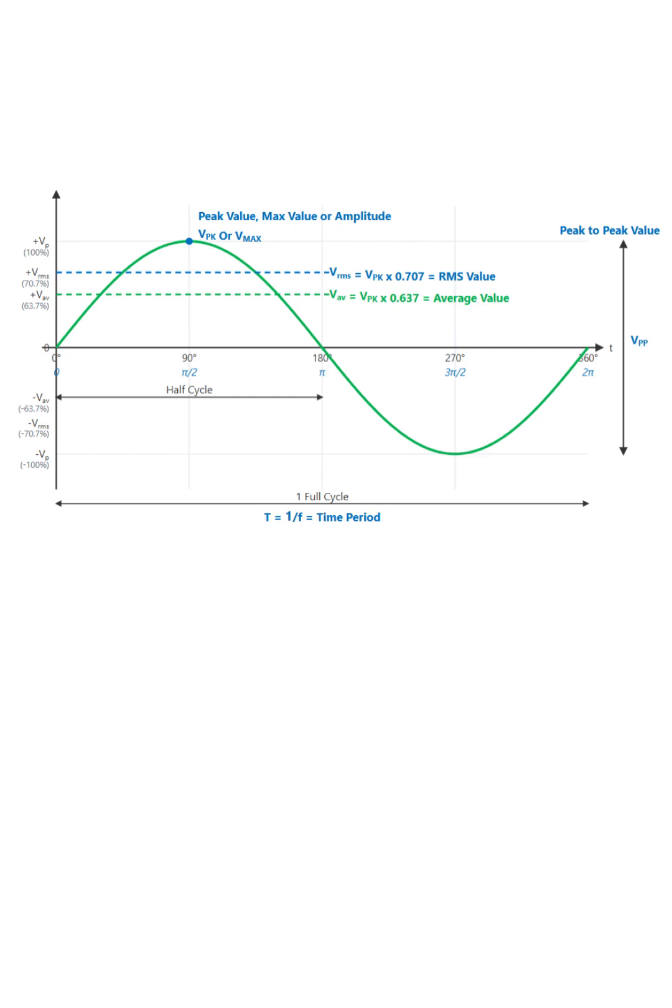Next is the peak-to-peak value, labeled Vpp. This is the total voltage swing from the lowest negative point all the way up to the highest positive point. It's simply twice the peak value.